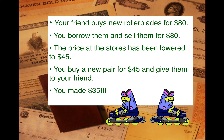You go to the store, buy the rollerblades for $45, and give them back to your friend — you just made $35. On the stock market, this works the same way: you borrow shares from a broker, sell them to someone else, and hope the price drops. When it does, you buy back the shares at the lower price and keep the profit.